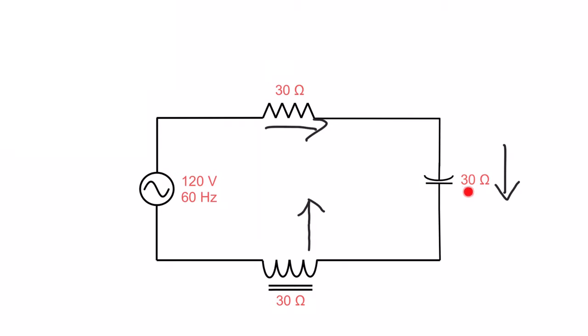Which means the only thing left in the circuit to oppose current is the resistance of the circuit. So doing the math in my head, showing you how smart I am, I can go 120 volts divided by 30 ohms, and I will get my current of 4 amps, right there. So that's that. That's how we work out a resonance circuit.